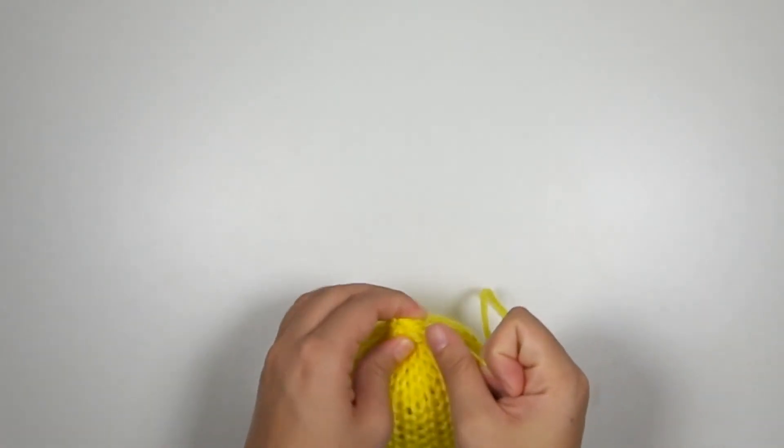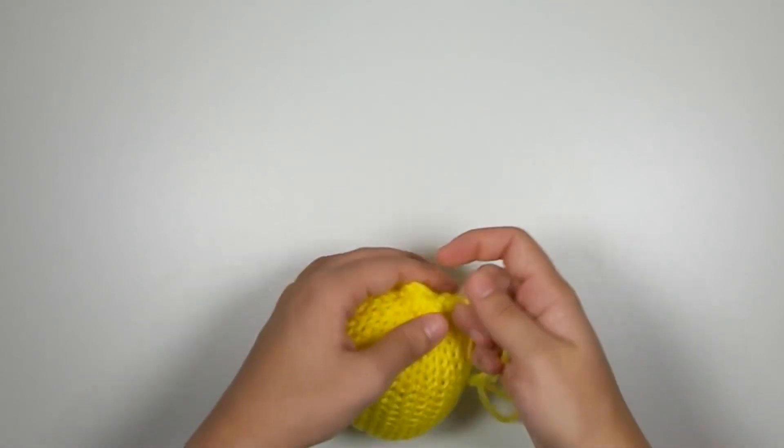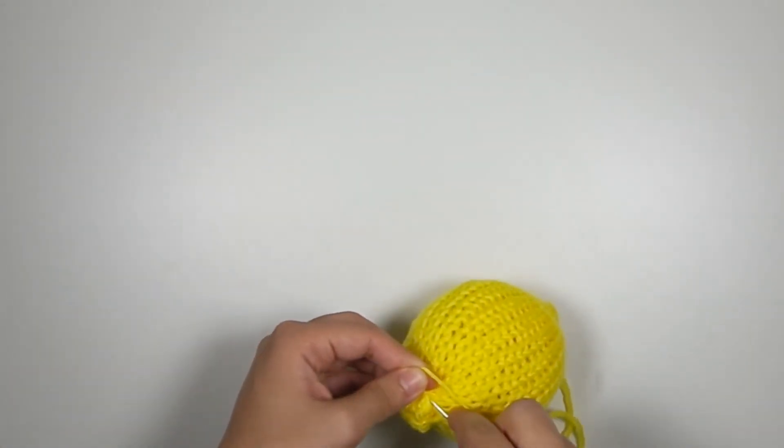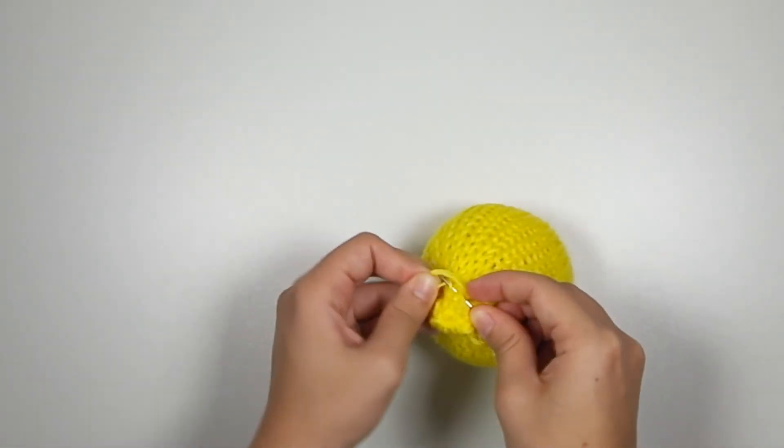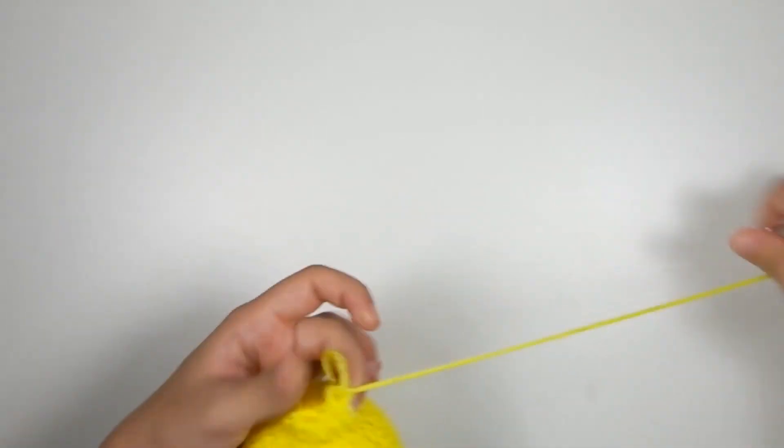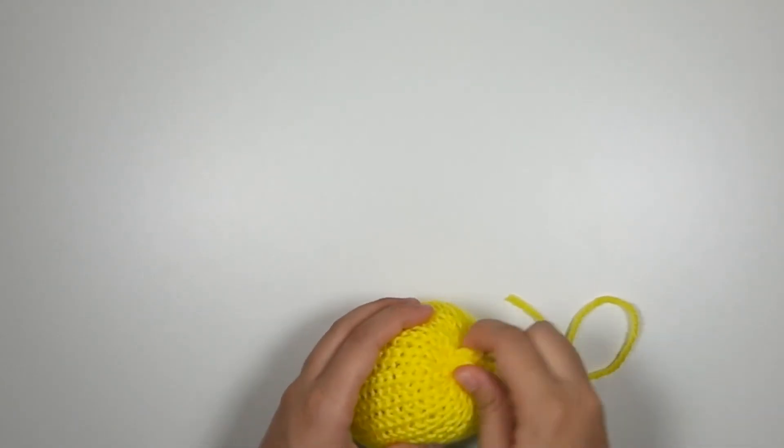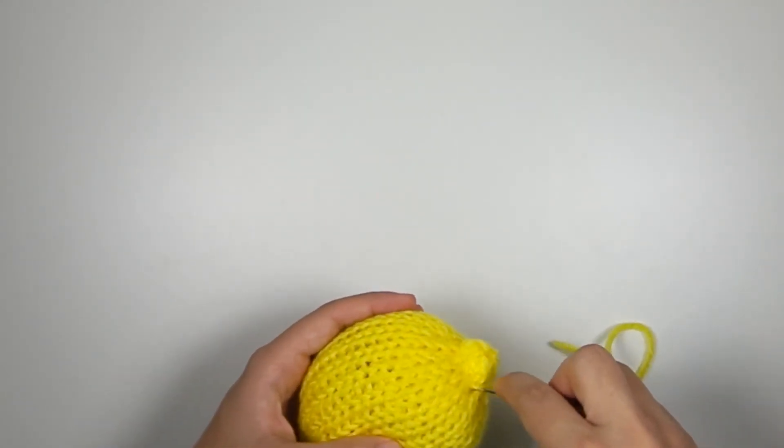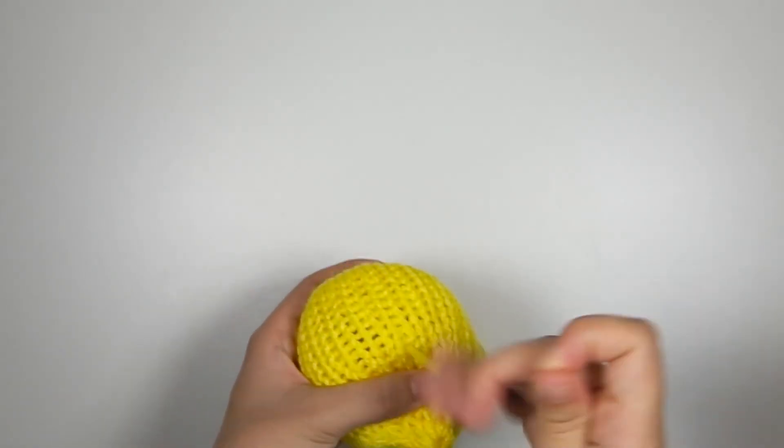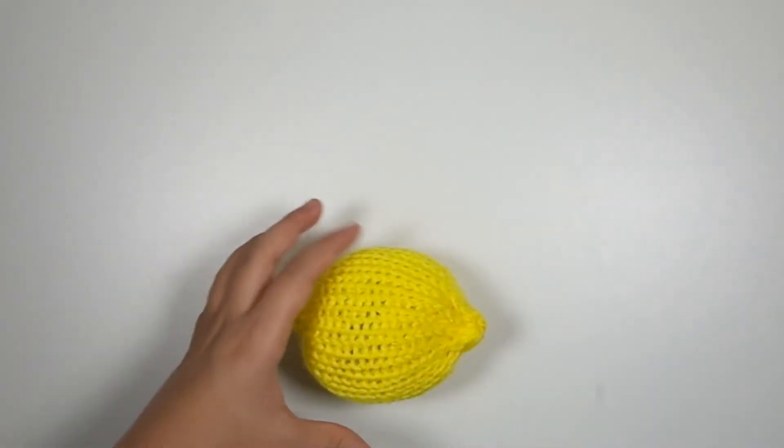Alright, so I'm just going to tug on that, make sure it's well cinched, to create the little knob on the end of the lemon. And now I'm going to hold on to it real tight, make my knot. And I'm going to bury the tail by just inserting my needle into the center, and coming out somewhere on the outside. And then I can just cut the extra yarn.